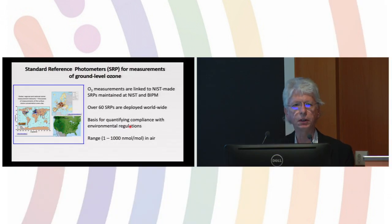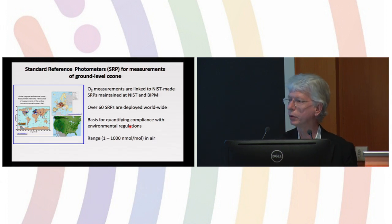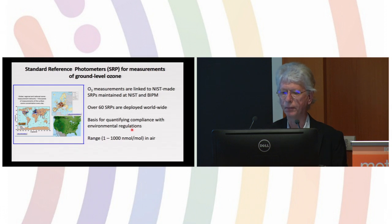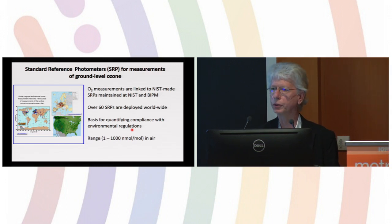It's based on observations of path length, number density, and an absorption cross-section, which is a molecular property or an invariant of the analyte. These are widely disseminated. There are four of them I believe at BIPM. This is the standard for ozone measurements, the SI traceable standard, the primary method.